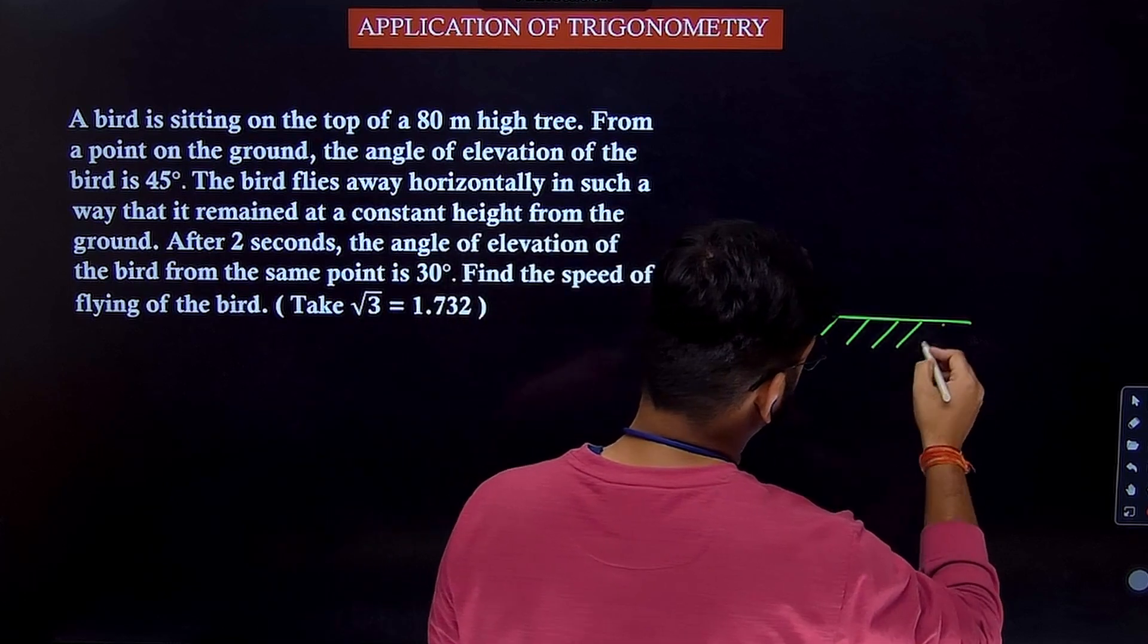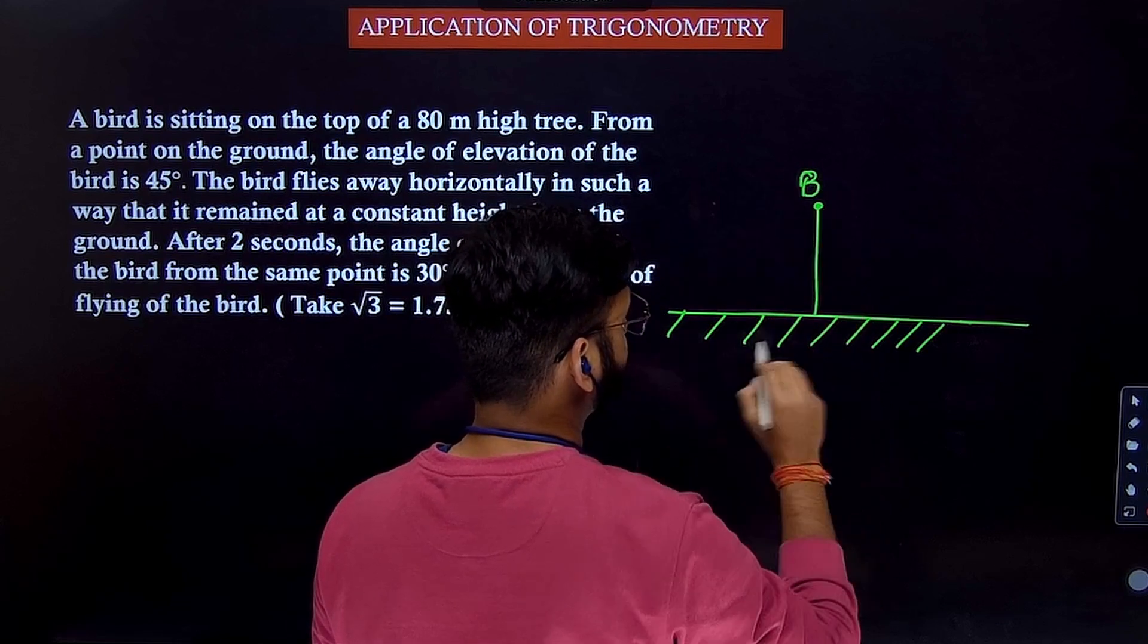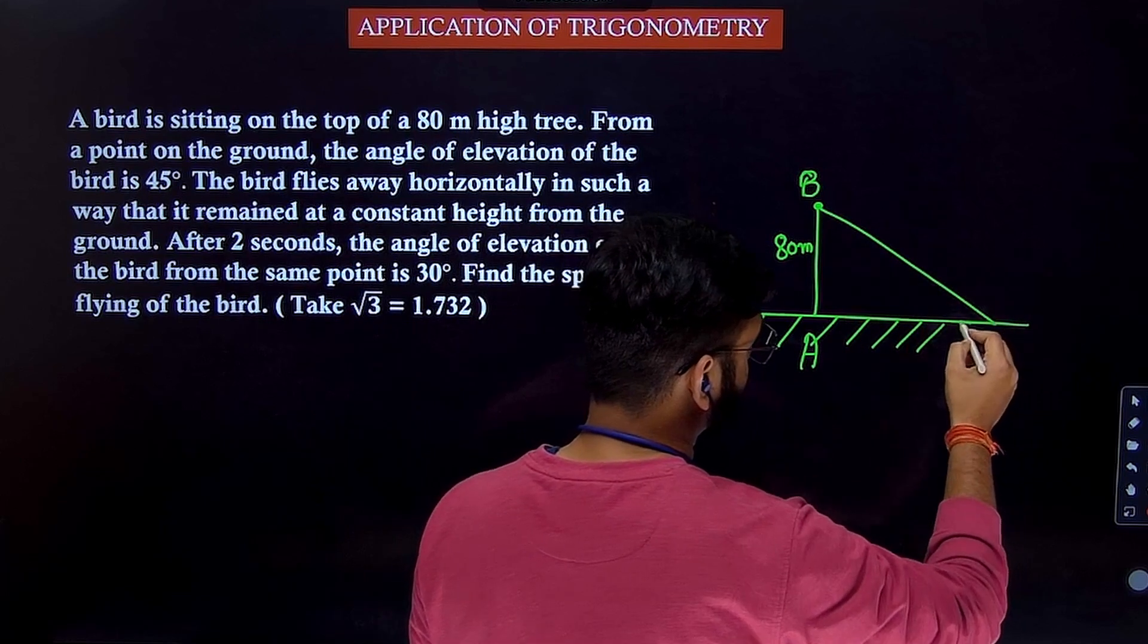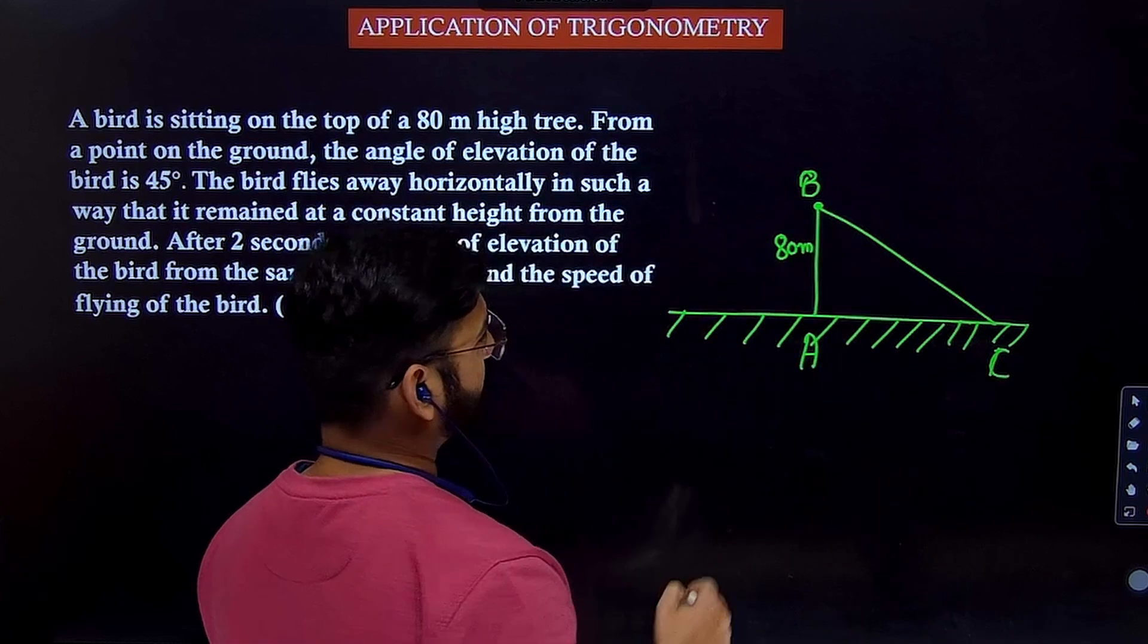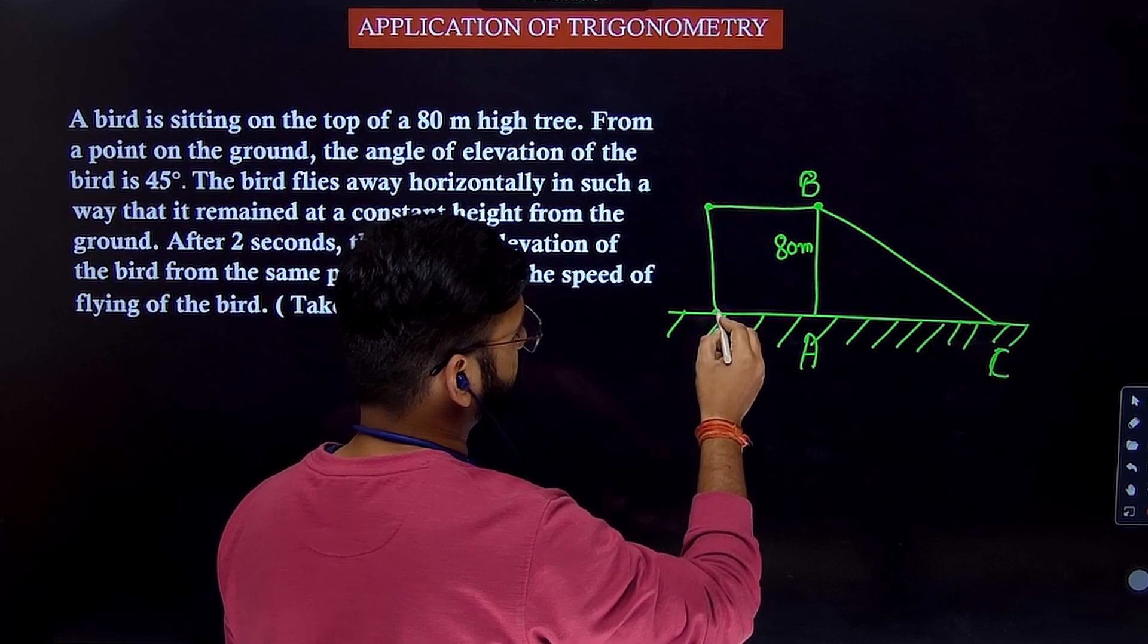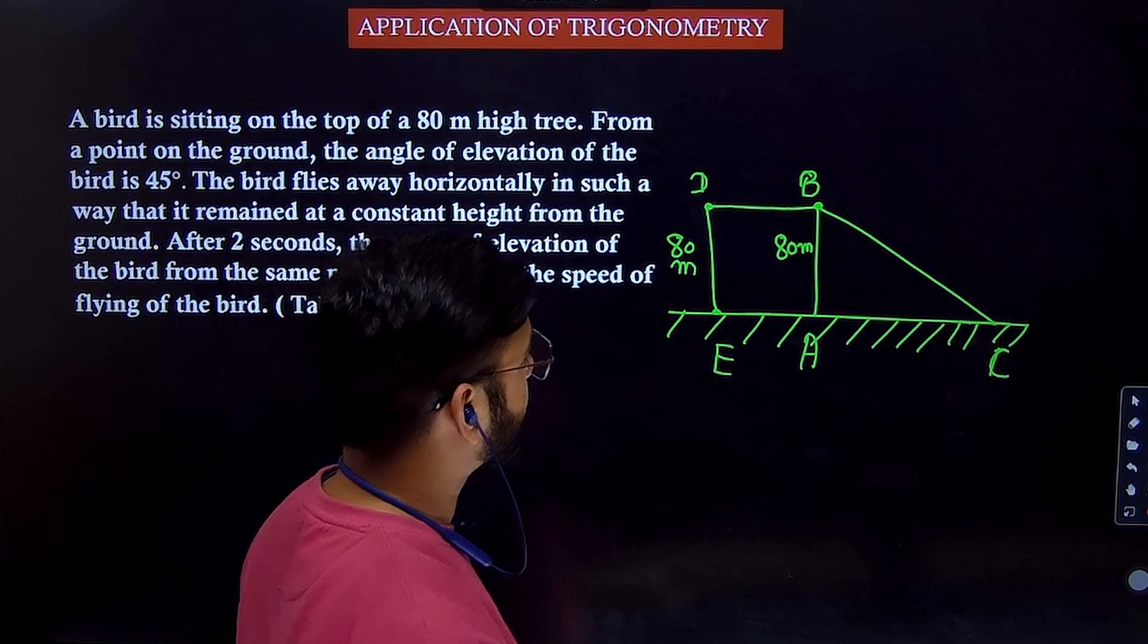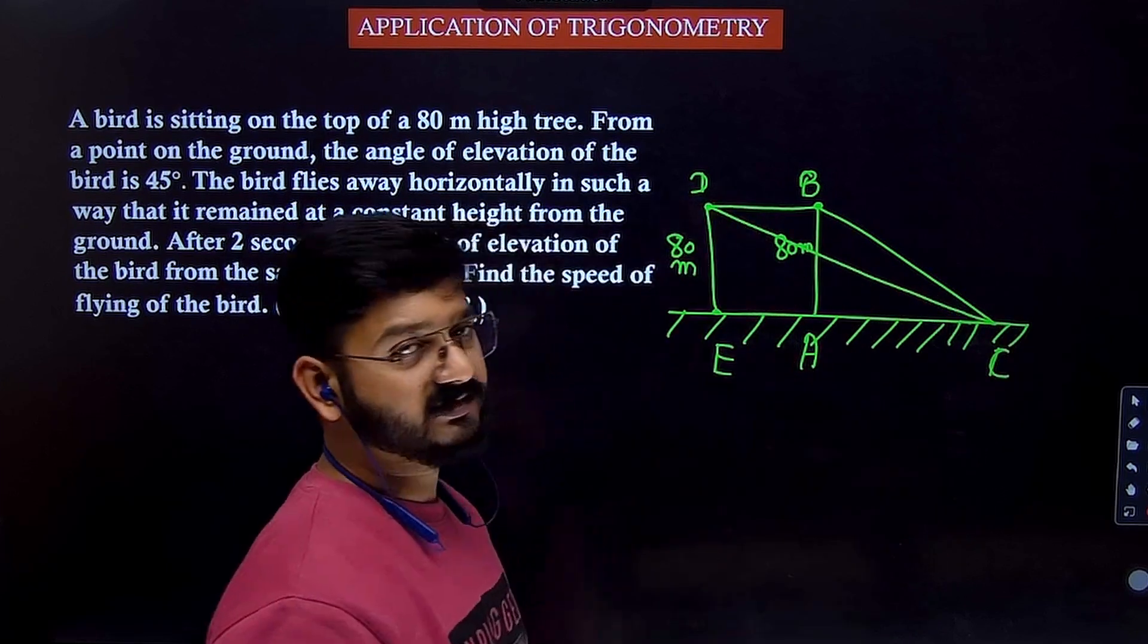So we are observing the bird from a point on the ground. Suppose the bird is sitting here, you can mark this point as B. This is A. Height of the bird is 80 meter. The bird is sitting on the tree. So you are observing the bird from a point on the ground, suppose this point you can take as C. Now the bird moves ahead at the same horizontal level for two seconds. So you can mark this point D and E. So D will be also same as 80 meter because the bird is flying at the same horizontal height.